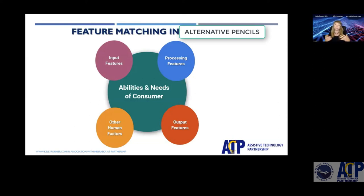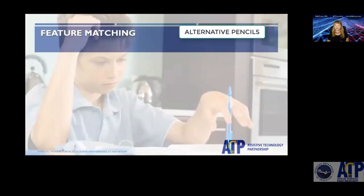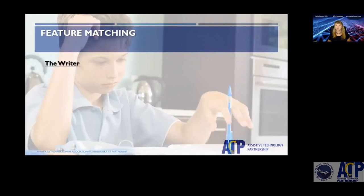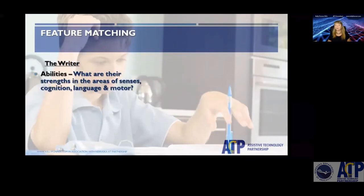How is the alphabet presented? How are the other functions of the keyboard presented to an individual? What does somebody get as a result of using their method — print output? What kind of print output? And of course all those other human factor features that make a difference in whether or not somebody is going to use the alternative pencil.